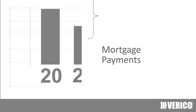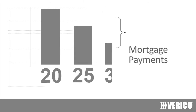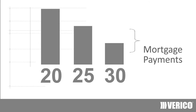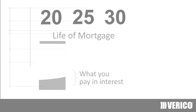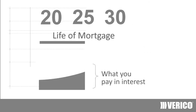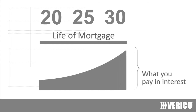The longer the amortization period, the smaller your monthly payments. But a shorter amortization period will save you money in interest payments over the life of the mortgage.